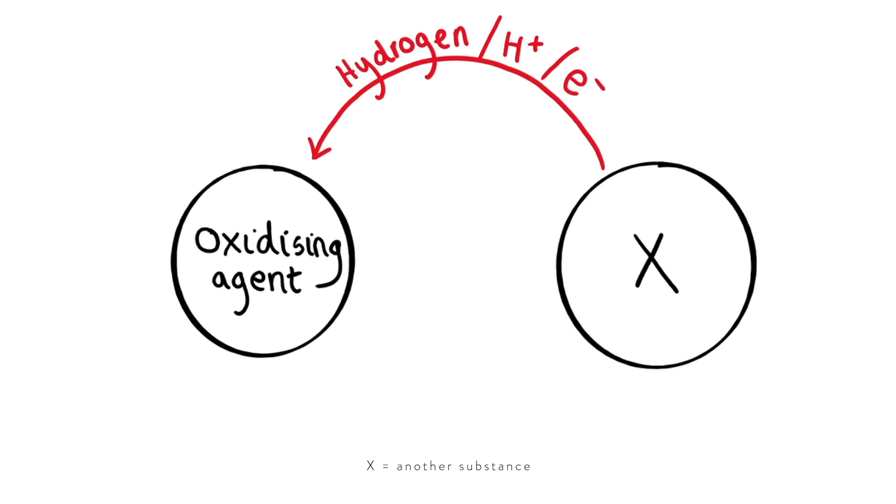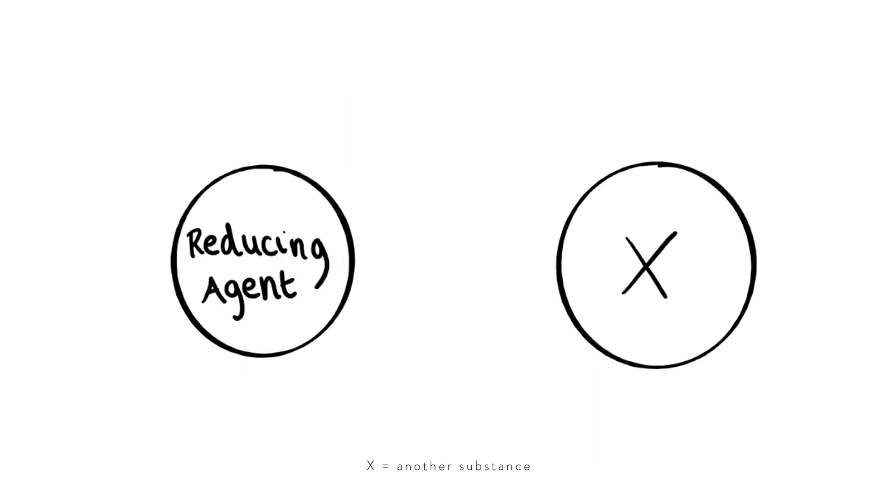So when it gains those electrons or hydrogens itself it means that it is reduced because it's gained them. And remember OILRIG, oxidation is loss, reduction is gain. And then on the other hand, a reducing agent has to reduce something else. So it has to give another substance electrons or hydrogen. And when it gives away those electrons or hydrogen itself will become oxidized because it's lost them. So I hope that makes sense again.